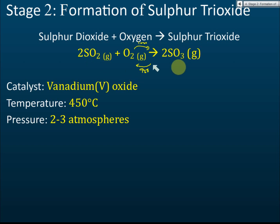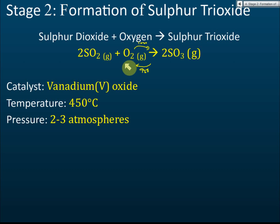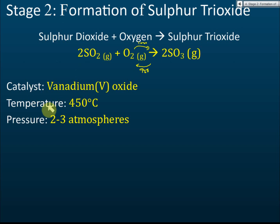In industry, we try to get the most sulfur trioxide in the shortest time. You cannot get 100%, but we aim to maximize yield efficiently. To achieve this, we use a catalyst, control the temperature, and control the pressure. These are called the optimum conditions to get the most sulfur trioxide in the shortest time.